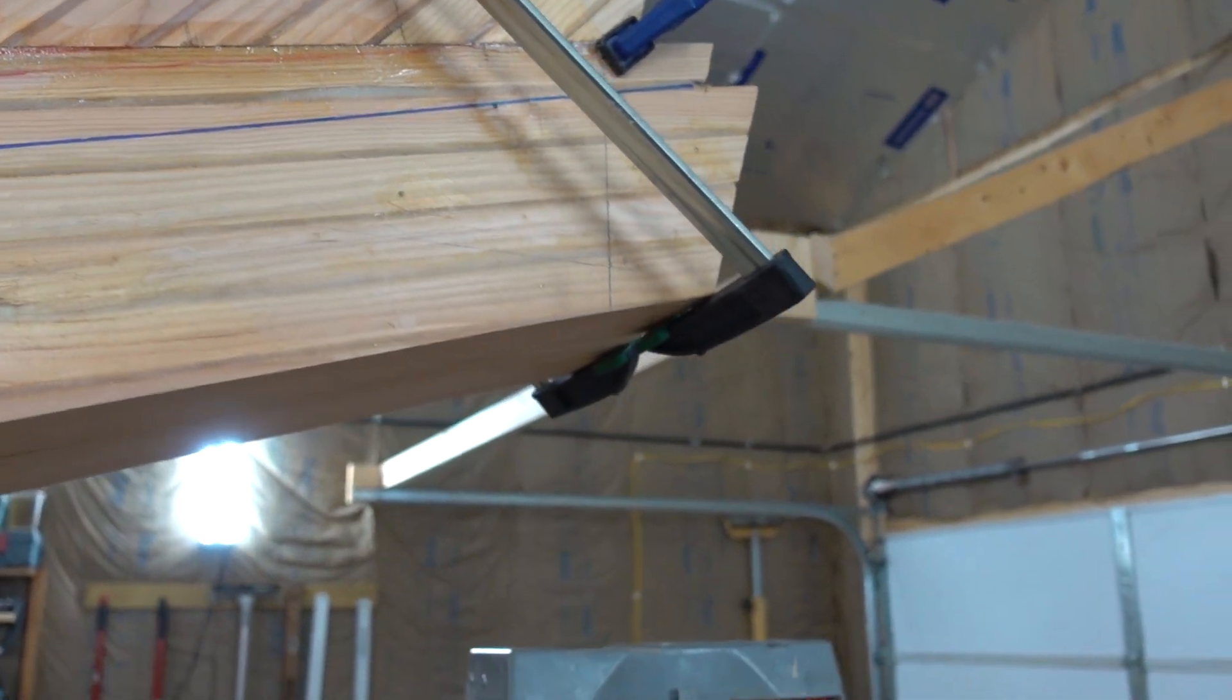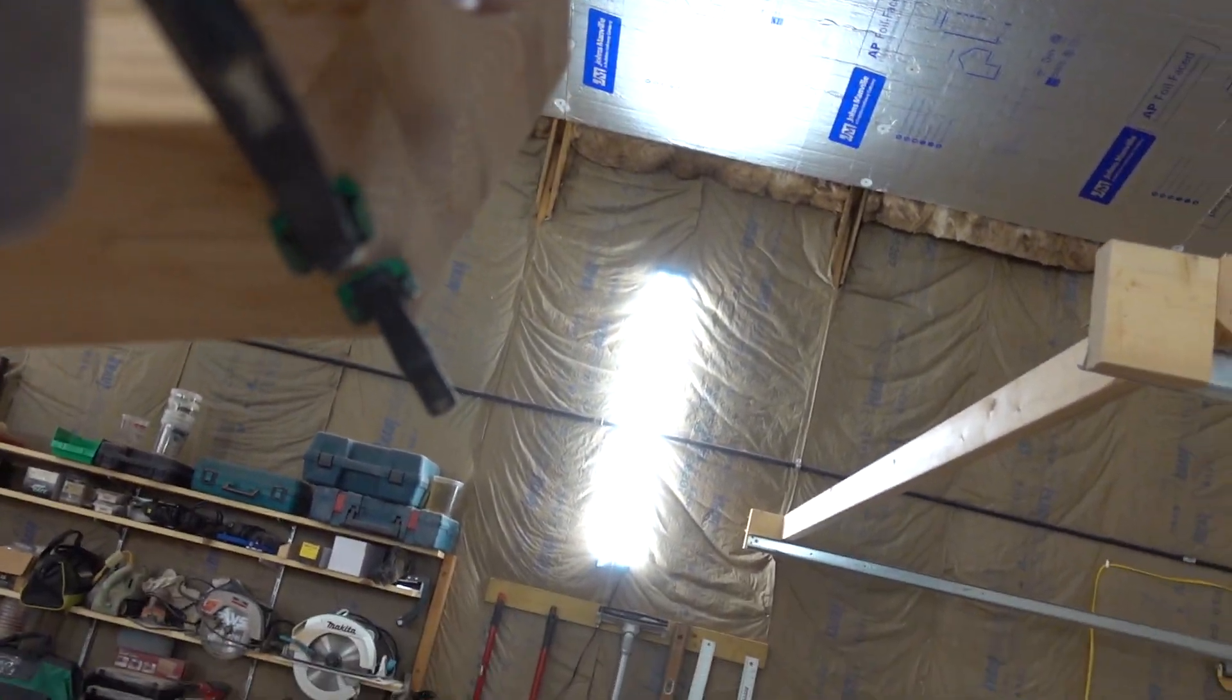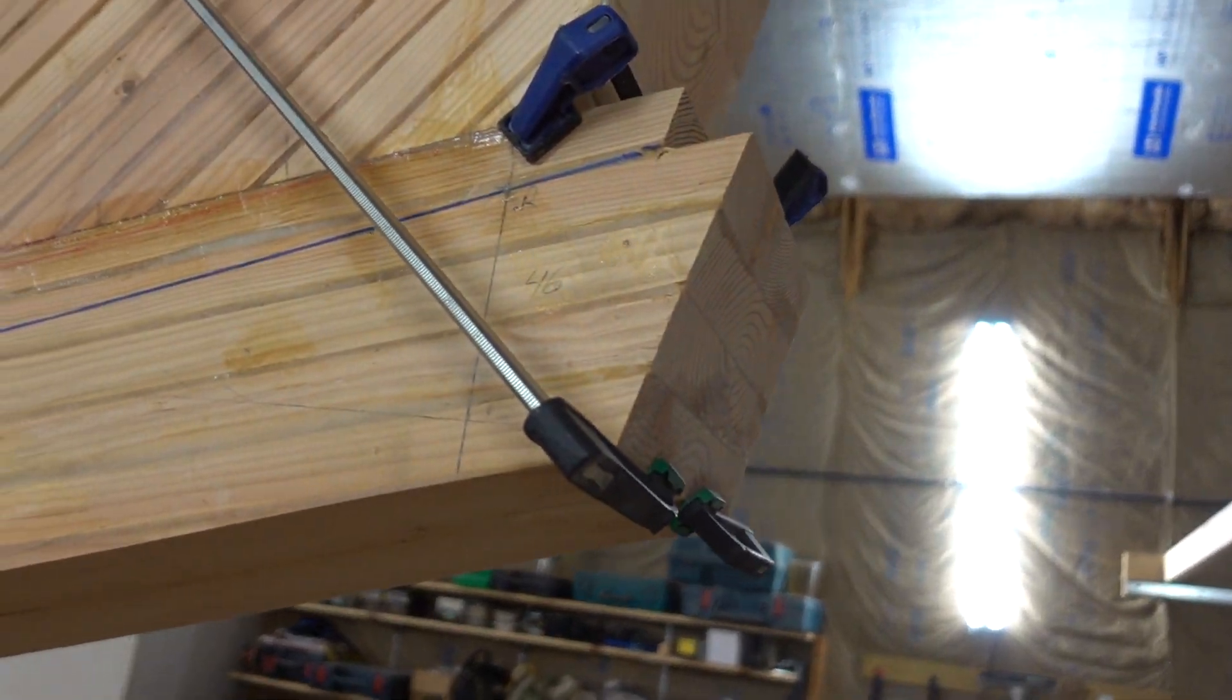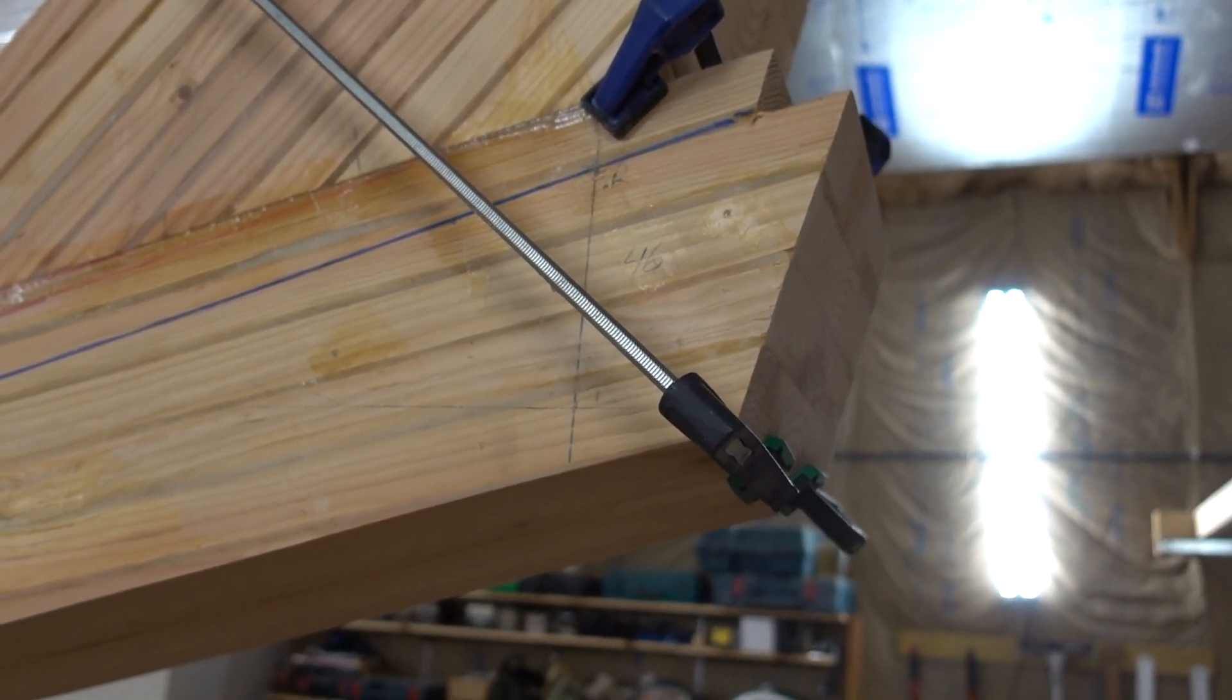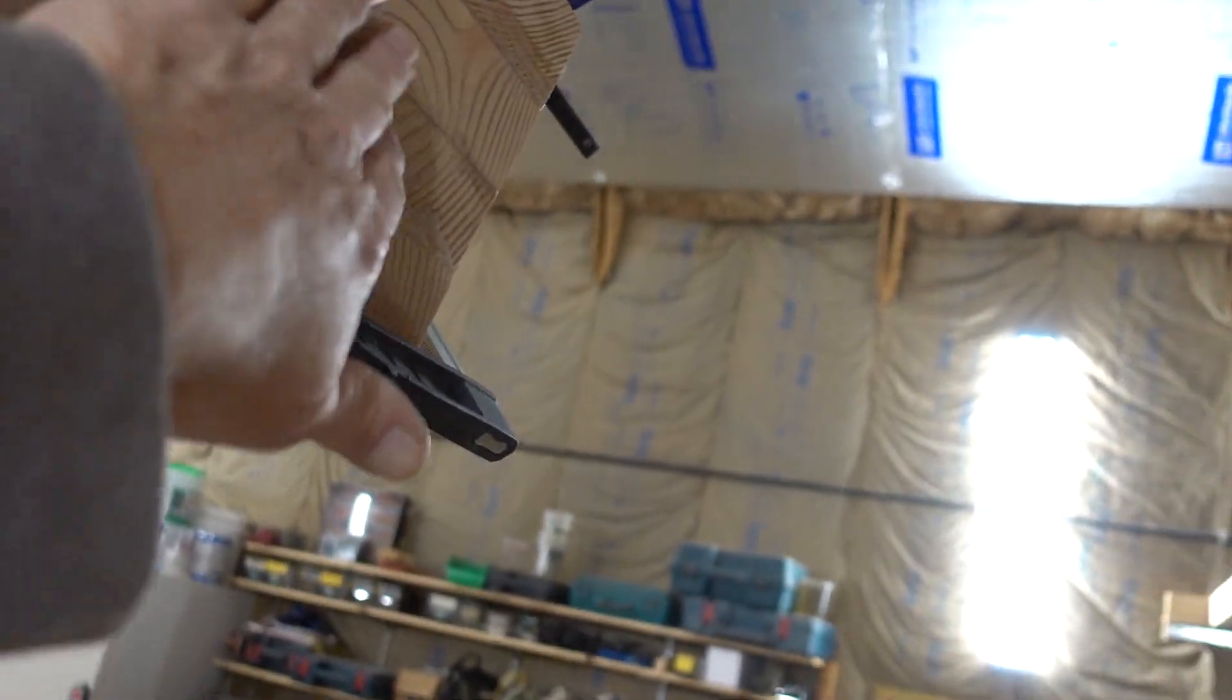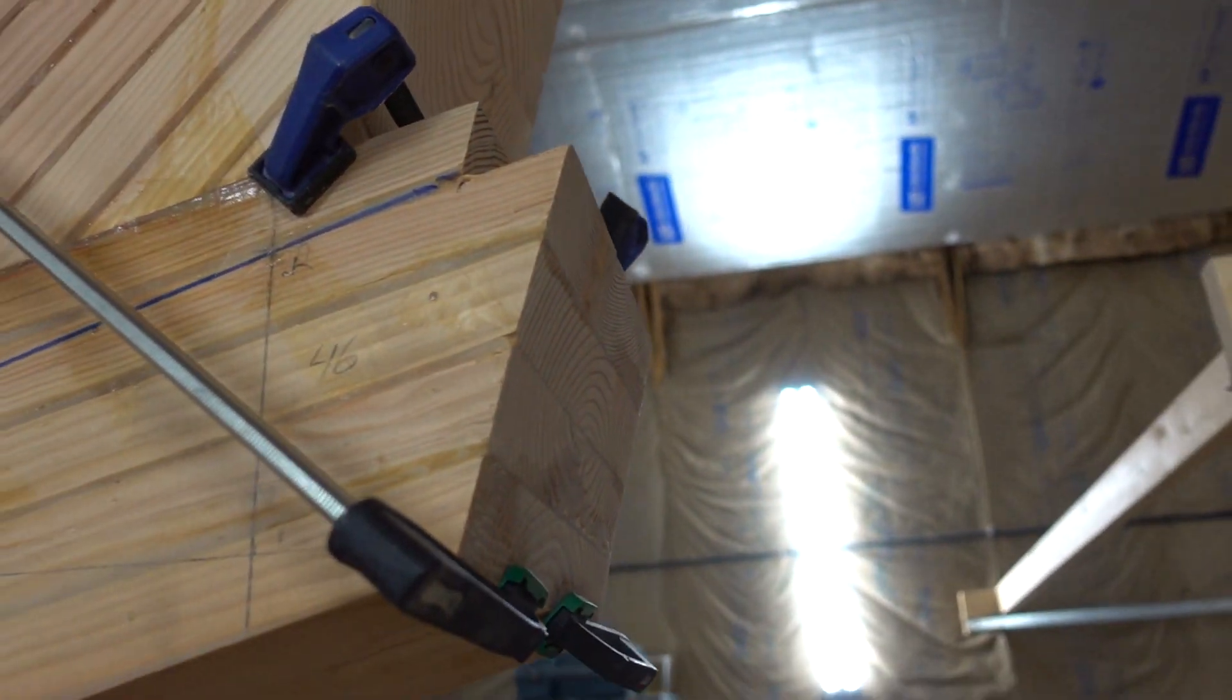I trimmed this line here just a little bit to make it a little easier to get my planking in there, because that's where the one and a half inch planking will go. I'm thinking the plywood will go over everything, will cover this and the rest of the sheeting.